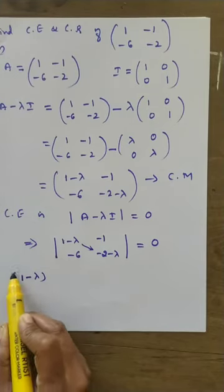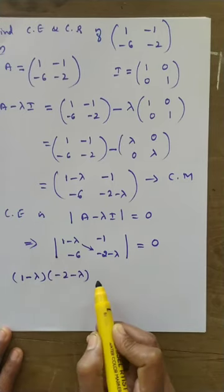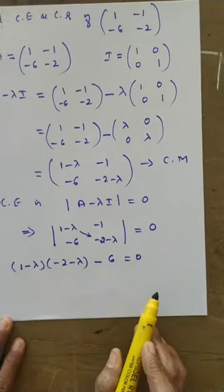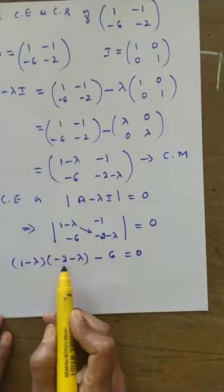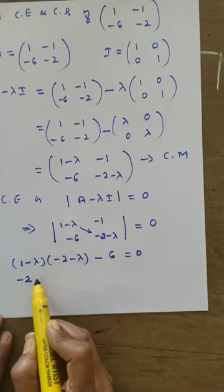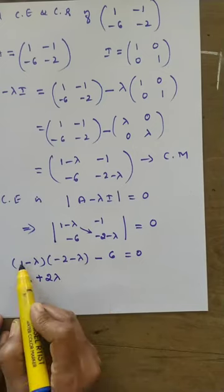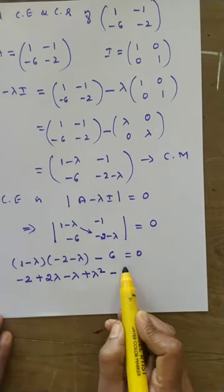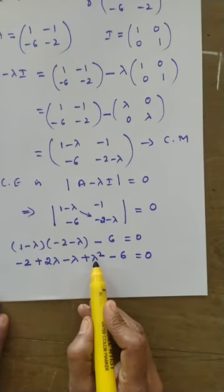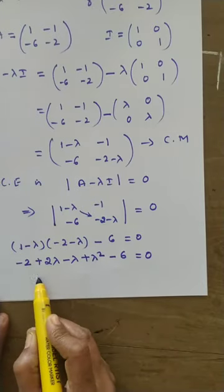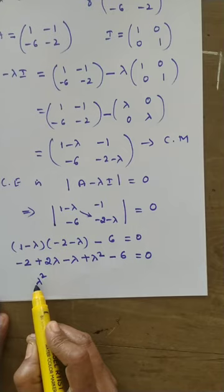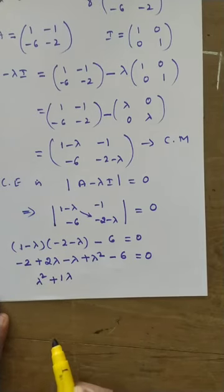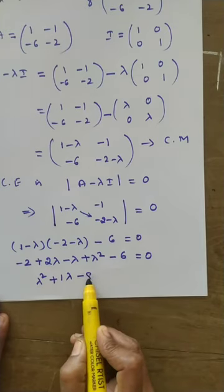Expand by cross multiplication: left side is (1-lambda)(minus 2 minus lambda), minus right side which is minus 1 times minus 6 equals plus 6. Expanding: minus 2 plus 2 lambda minus lambda plus lambda squared, minus 6 equals zero. Simplifying: lambda squared plus lambda, and minus 2 minus 6 equals minus 8, giving lambda squared plus lambda minus 8 equals zero. This is the characteristic equation.